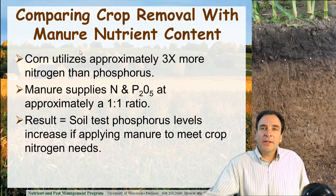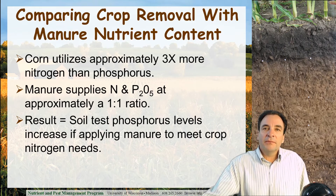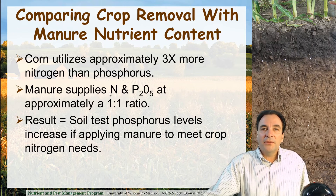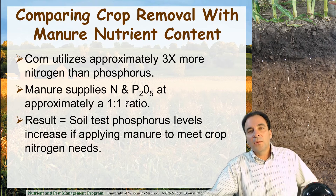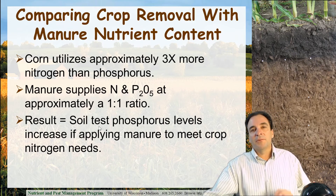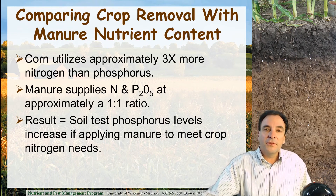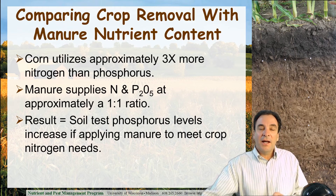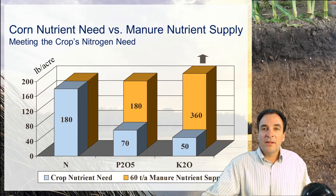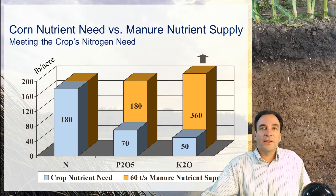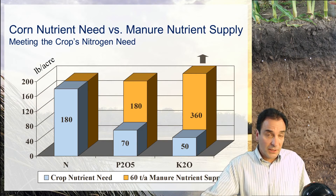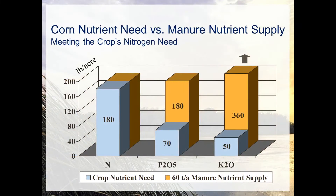When comparing the nutrient content of manure with crop removal, specifically with corn: corn utilizes about three times more nitrogen than phosphorus, but manure applies nitrogen and phosphorus at more or less a one-to-one ratio. So if we're applying manure to meet the nitrogen needs of the crop, we're going to be building up soil test phosphorus levels over time — not necessarily bad, as long as we keep that enriched soil on the landscape and minimize runoff.